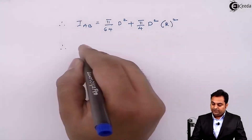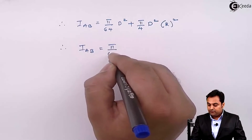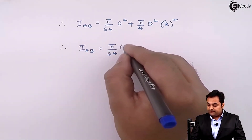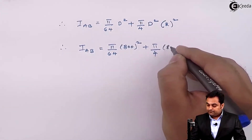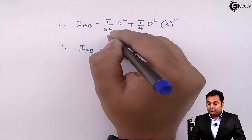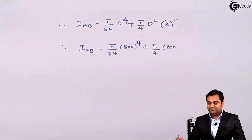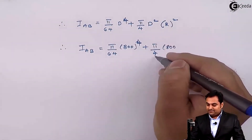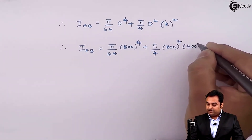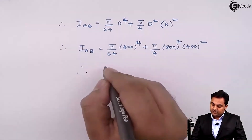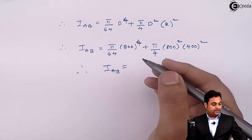Putting in the values: I_AB equals π/64 times 800 to the power 4, plus π/4 times 800 squared — the area term — with h equal to 400 mm, so h squared is 400 squared.